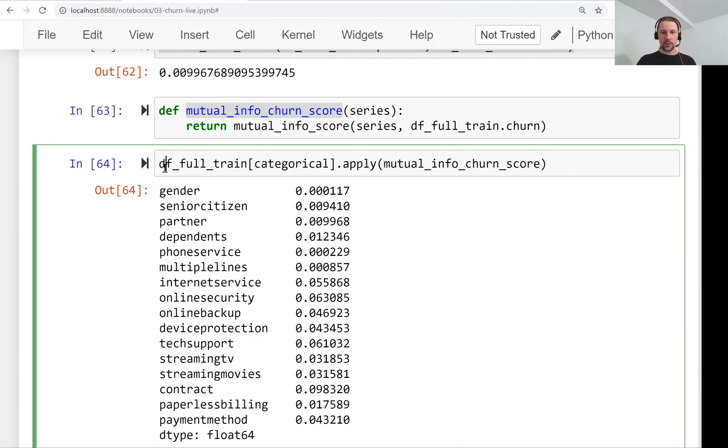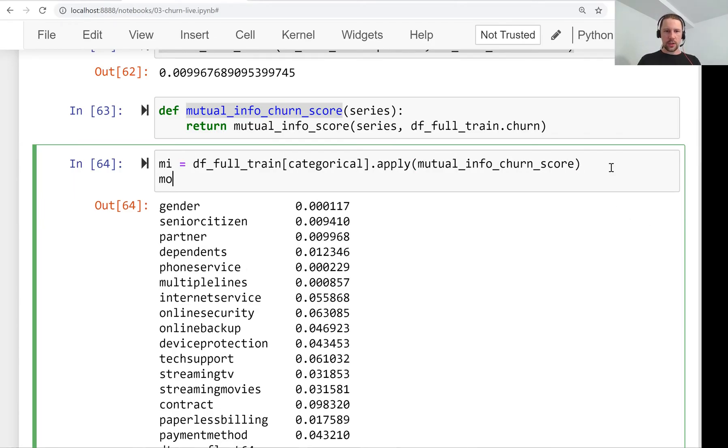What we want to do now is sort this so that the most important ones come first. Let's call this series MI, which is mutual information, and we can now sort this using the sort_values function.